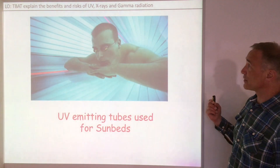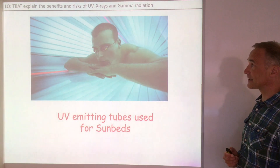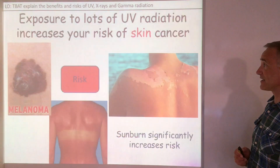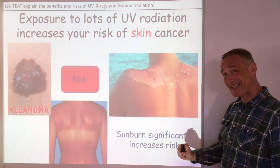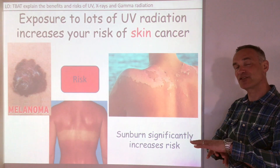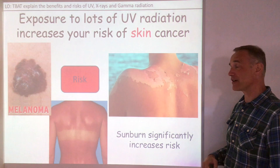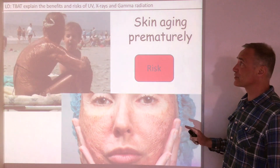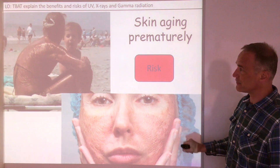UV can also be emitted from sun beds if you don't have the coating on to produce visible light. But there are of course risks — the key one is skin cancer. It's really important to mention skin cancer specifically, because ultraviolet radiation cannot penetrate deep into tissue, only on the surface, which means it causes skin cancer rather than cancers deeper inside the body. UV radiation also causes premature skin ageing.